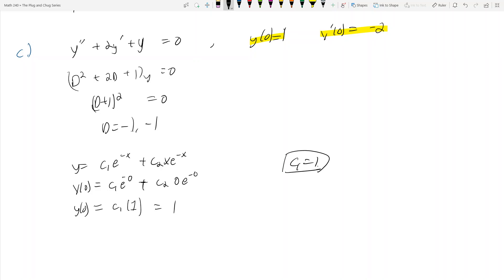Then y prime is negative C1 e to the negative x plus C2 e to the negative x plus C2 x e to the negative x times negative sign because you have to use the product rule on C2 x e to the negative x. Here you take the derivative with respect to the x and then here you take the derivative with respect to e to the negative x, which is why the negative sign comes down.